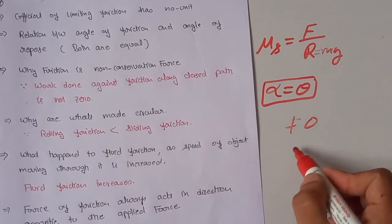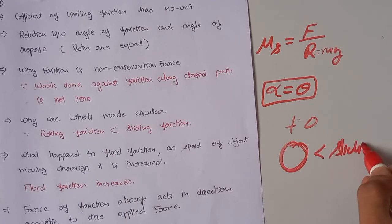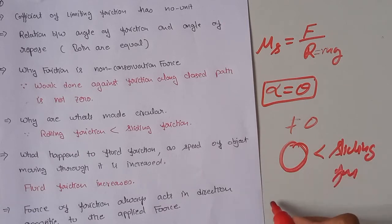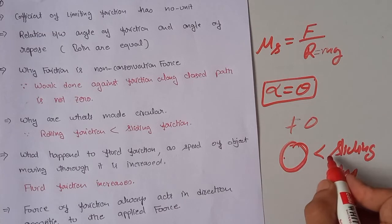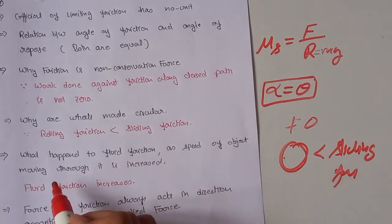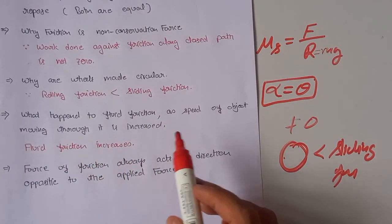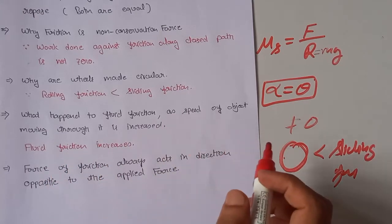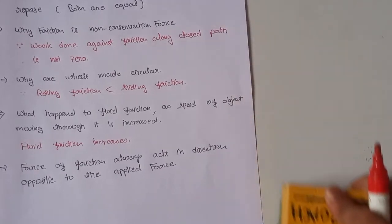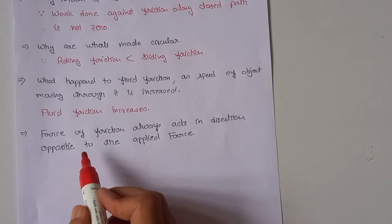Wheels are made circular because rolling friction is less than sliding friction. Regarding fluid friction: as the speed of an object moving through a fluid increases, the fluid friction also increases.